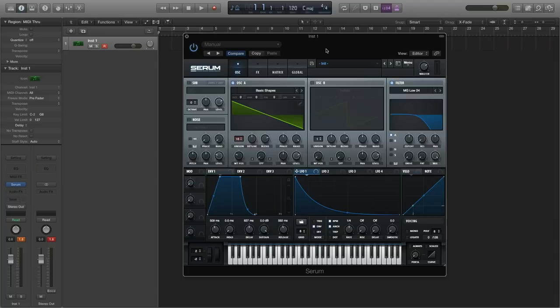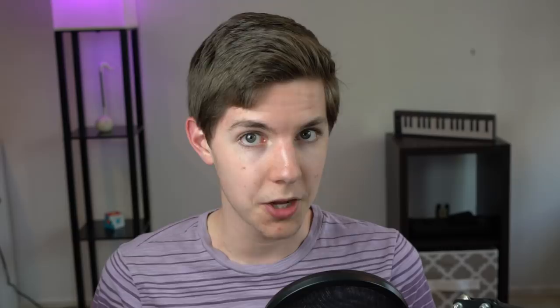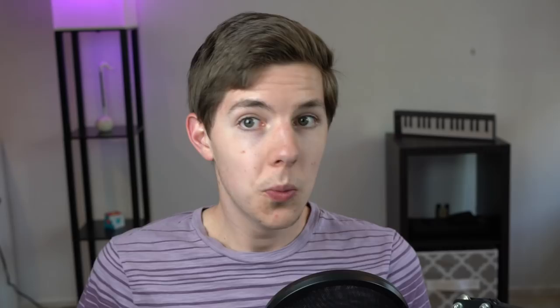Speaking of reverb, effects are another tool at our disposal to shape our sound. I'm not going to spend a ton of time on them here, because if you're into production you're likely at least somewhat familiar with the basic effects — these include reverb, delay, distortion, flangers, phasers, and dimension expanders. One suggestion I've heard for people starting out is to take a bunch of waveforms, apply a bunch of filters and effects, and mix and match, so you'll know what things sound like in combination. Maybe the next time you hear a gritty bass in a song, you'll know that's a sawtooth wave with a little bit of unison, distortion, and some sort of filter on it.